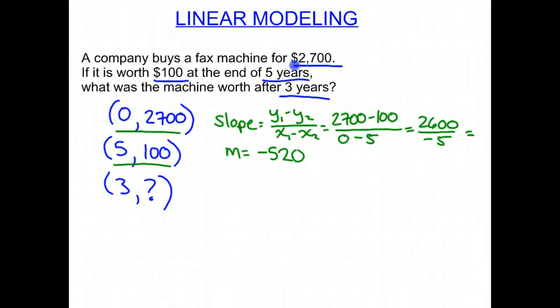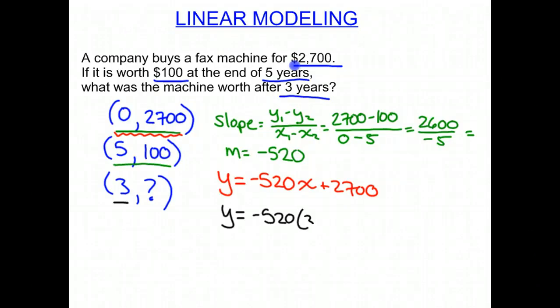So now we can write our equation. Because we have our y-intercept here. So remember, that's our b. So we have y equals our slope, mx plus b, which is 2,700 in this case. And then we need to find out, when x is 3, what will y be? So y equals negative 520, x is 3, plus 2,700.